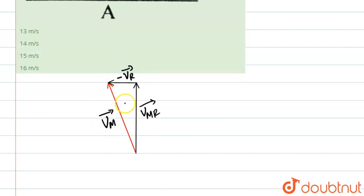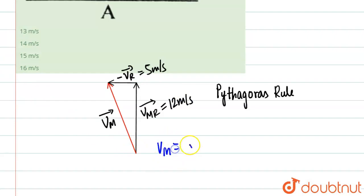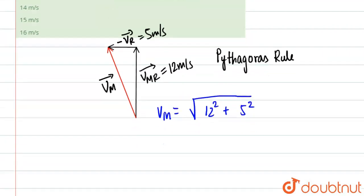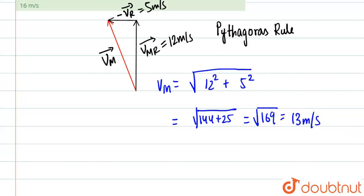We find the man's velocity using the Pythagorean rule. VMR is 12 meters per second and the river velocity is 5 meters per second. So VM equals the square root of 12 squared plus 5 squared, which equals the square root of 144 plus 25, which equals the square root of 169, which equals 13 meters per second.